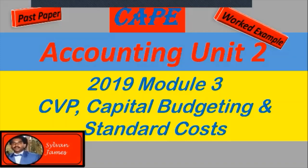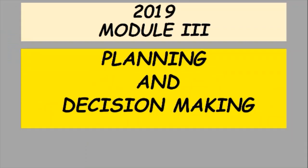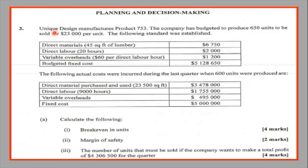Welcome to another Mr. James Accounting tutorial. This time we are looking at Accounting Unit 2, 2019 Module 3 Paper 2. We will look at cost-volume-profit analysis, capital budgeting, and standard cost. We have some data here — some of it is budgeted and some of it is the actual cost — and we are asked to calculate the breakeven units, margin of safety, and the number of units that must be sold if the company wants to make a total profit of four million, three hundred and six thousand, five hundred for the quarter.